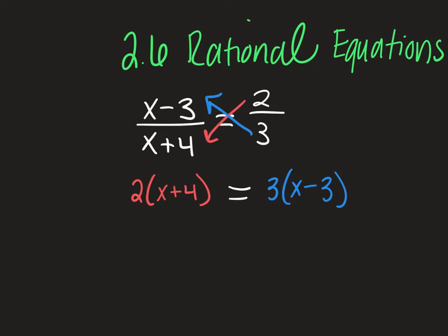So now, boom, fraction gone. And then we've got to solve it from here. We're going to do the distributive property. So we're going to do 2 times x, 2 times 4 plus 8, and then we're going to distribute the 3, which equals 3x minus 9.